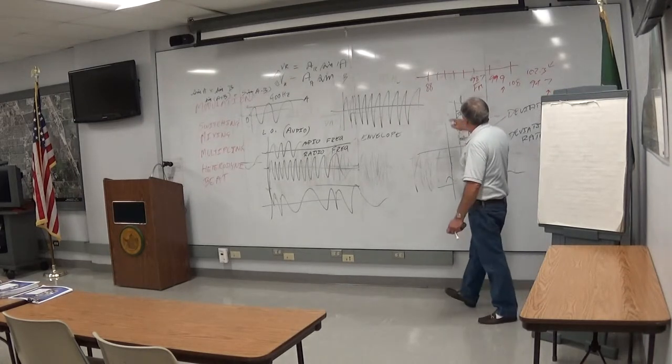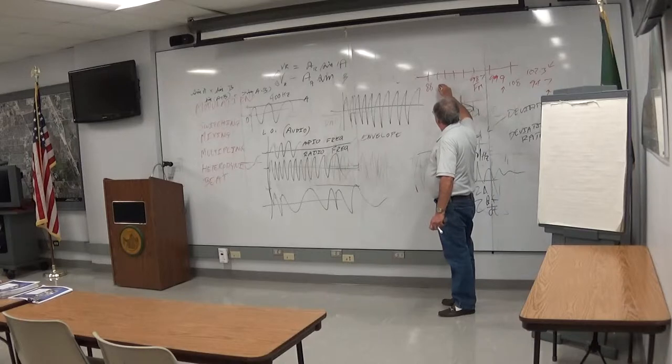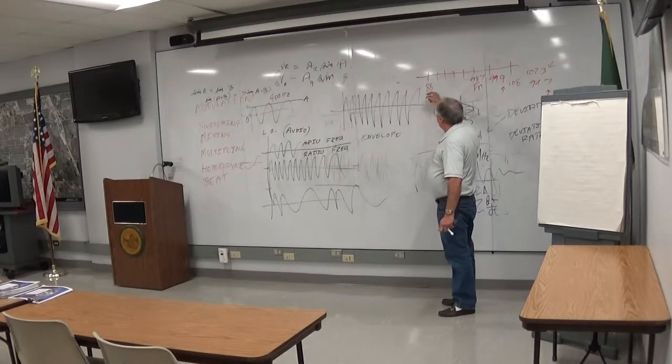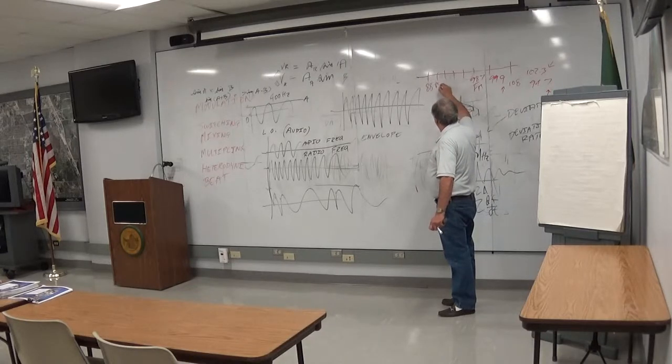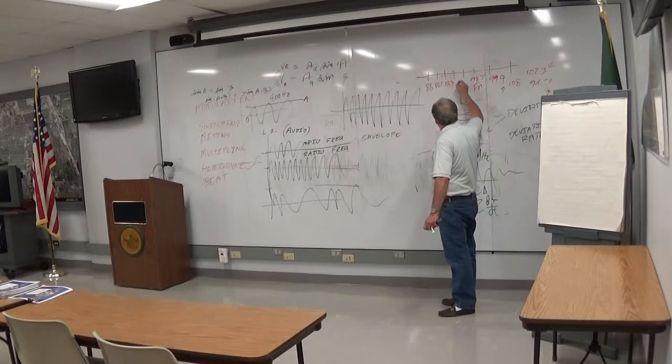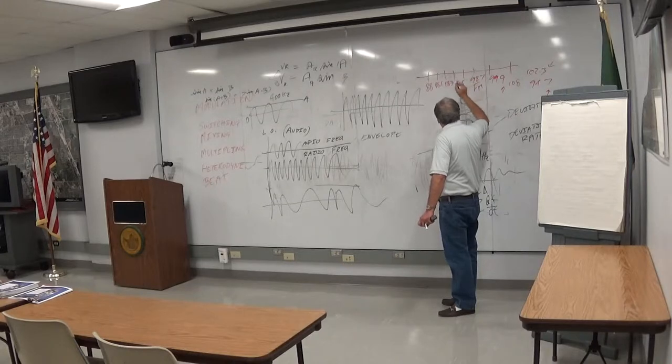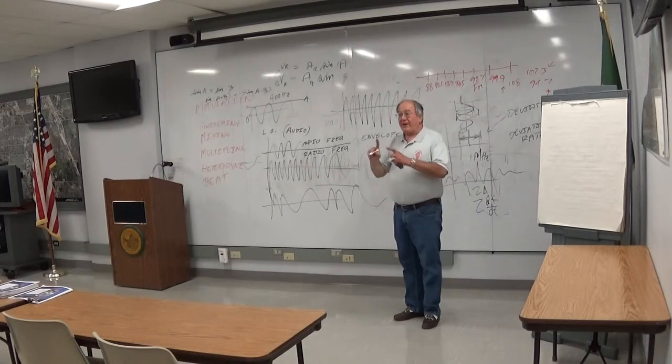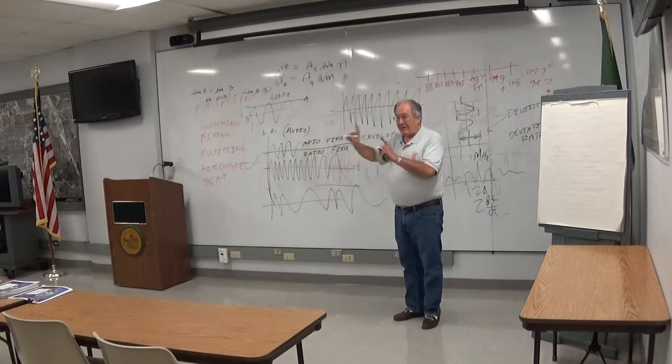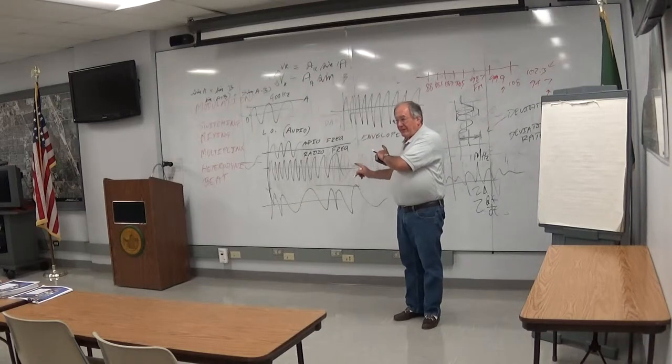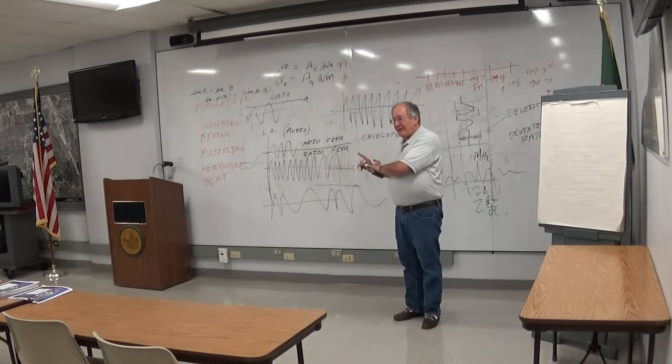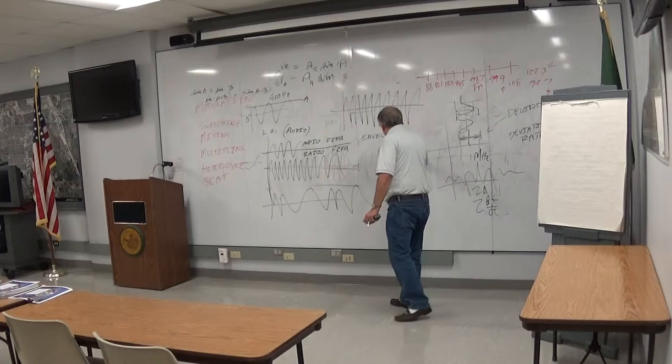And the actual allocations are, 88 is the lower end of the band. The first station is at actually 88.1, and the next one is at 88.3, and then 88.5. So how far apart are each one? They're 2 tenths of a megahertz. That's 200 kilohertz.